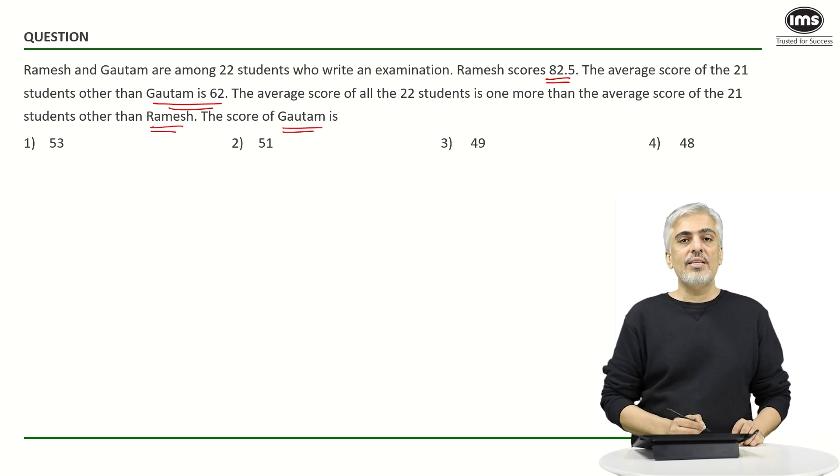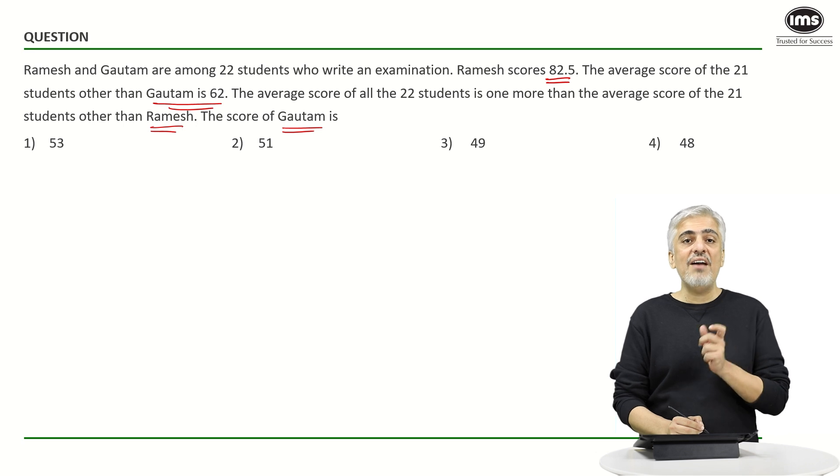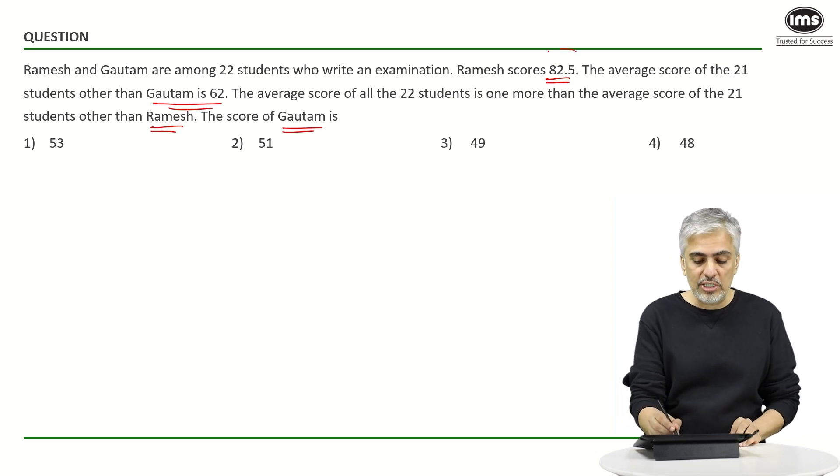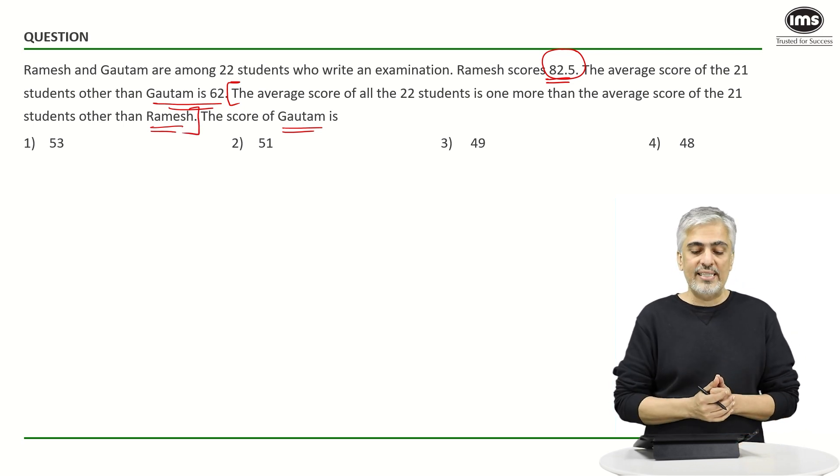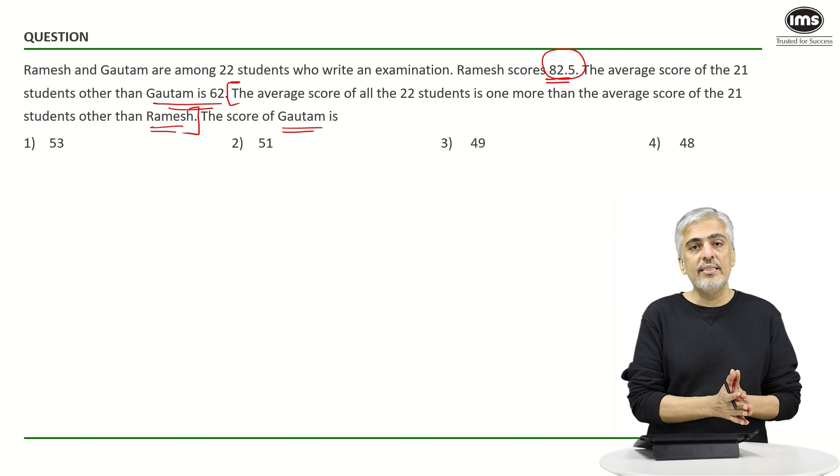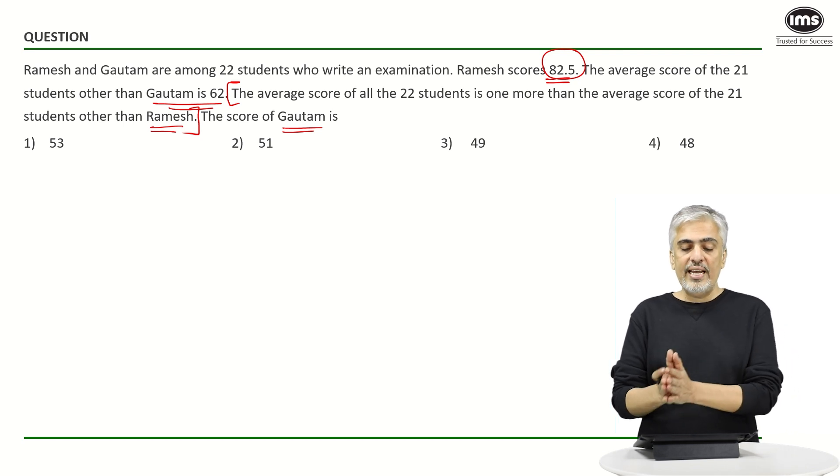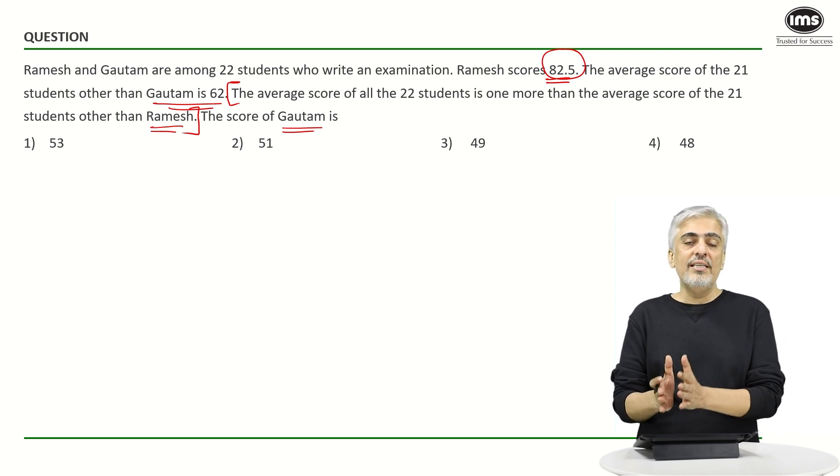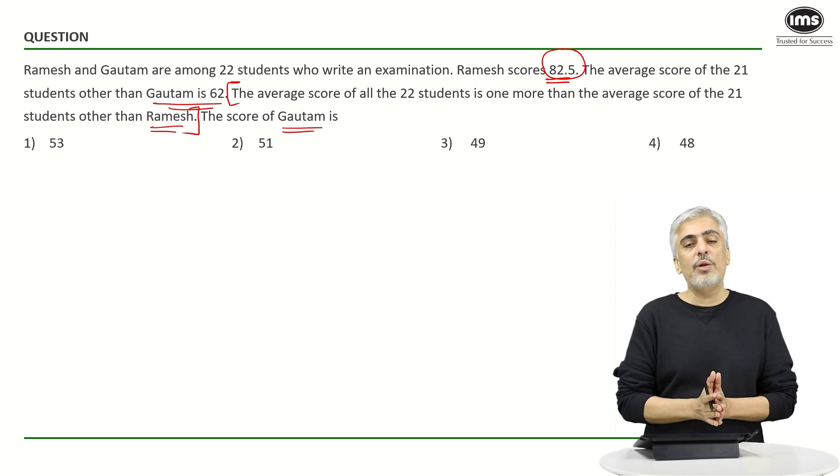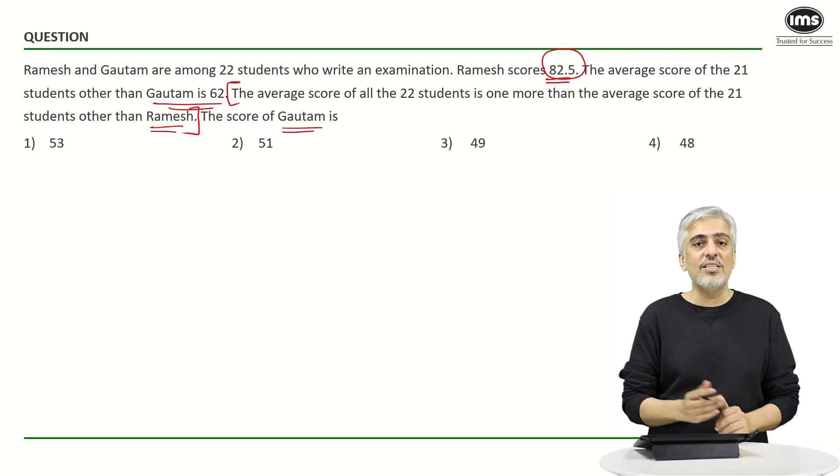Now understand that we have Ramesh's score right, we know Ramesh's score is 82.5. Hence making use of statement 2 earlier made a lot more sense, where they told us the average score of all the 22 students was one more than the average score of 21 students other than Ramesh. That means if I exclude Ramesh, if the average score is something, if I include Ramesh it becomes plus one extra. So let's assume that without Ramesh the average score was x.